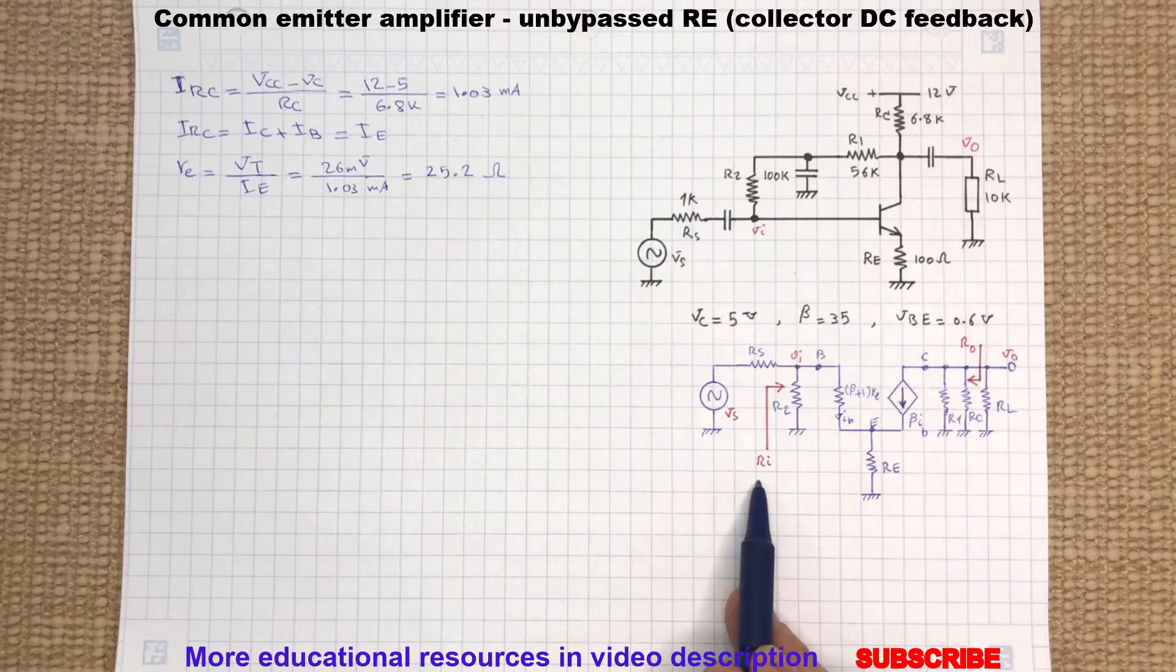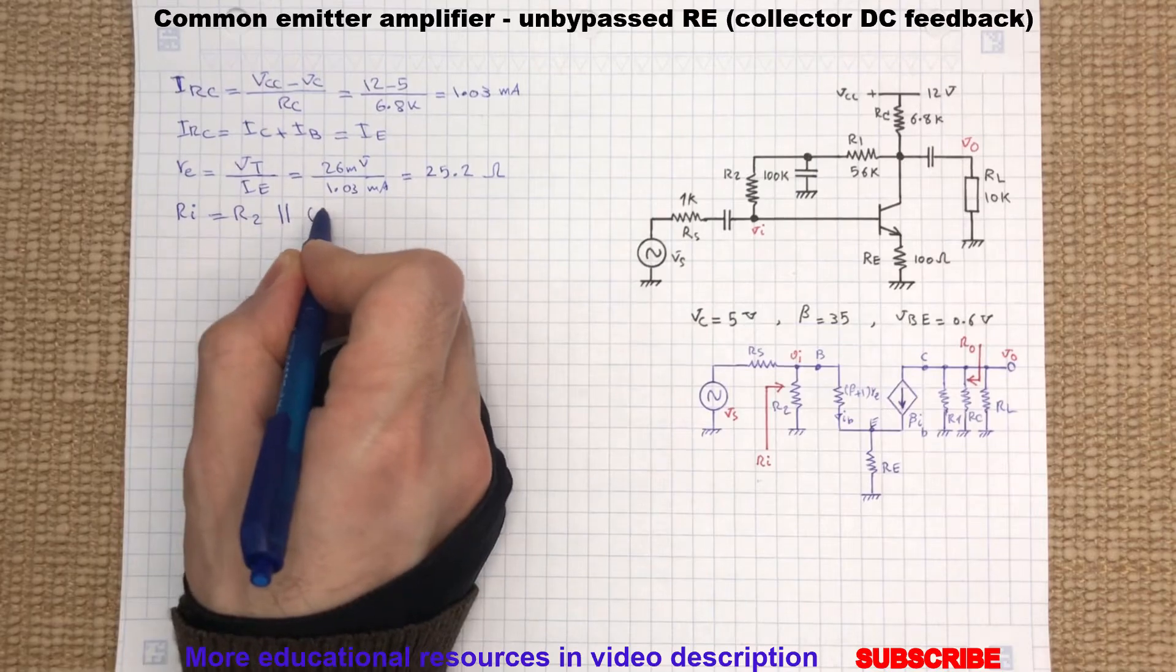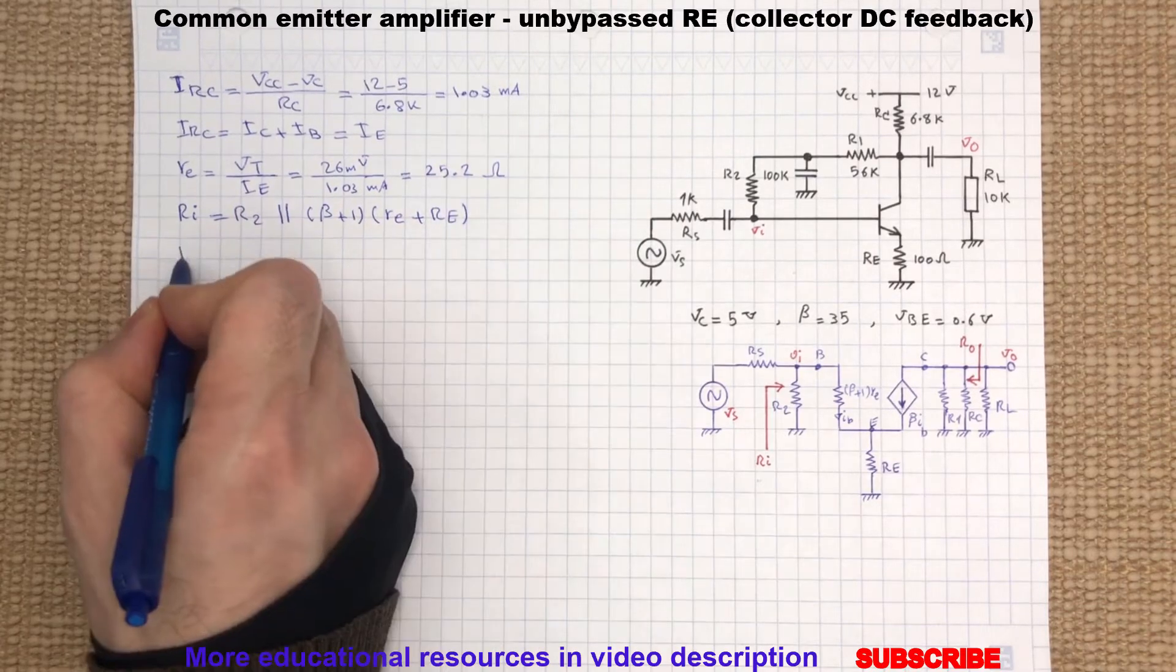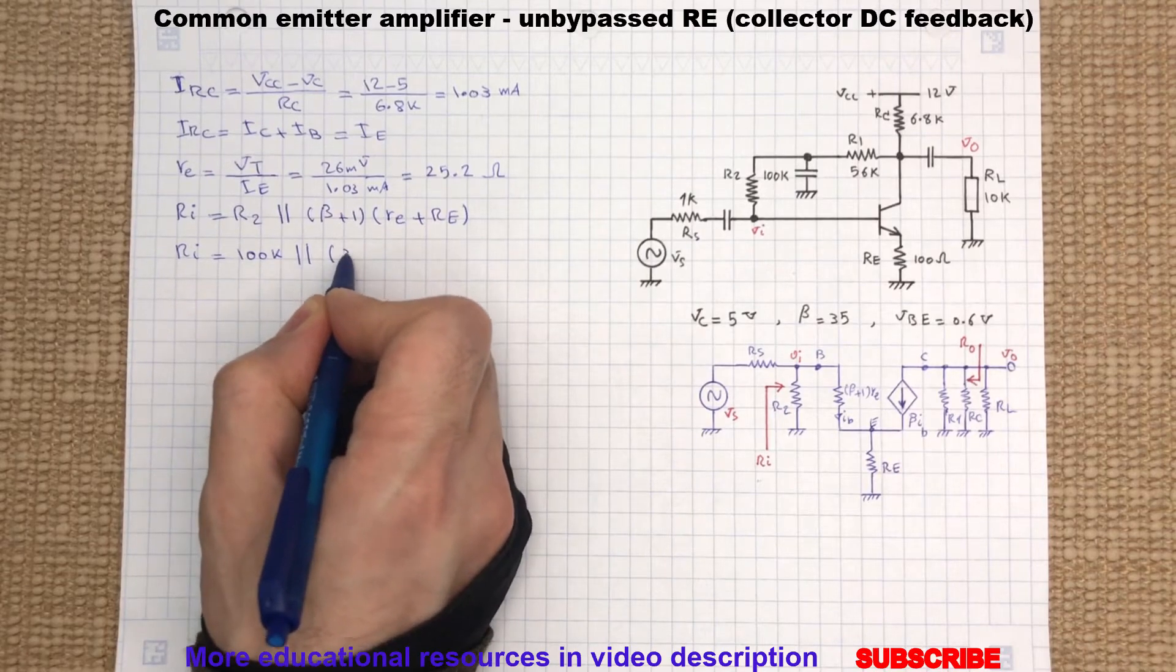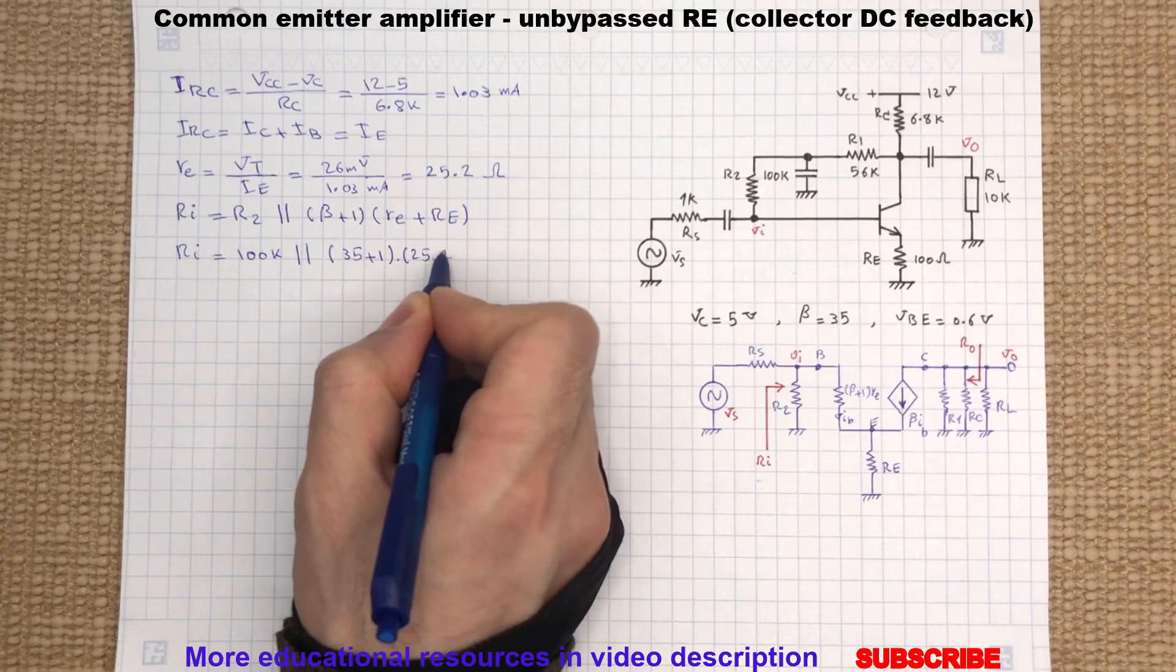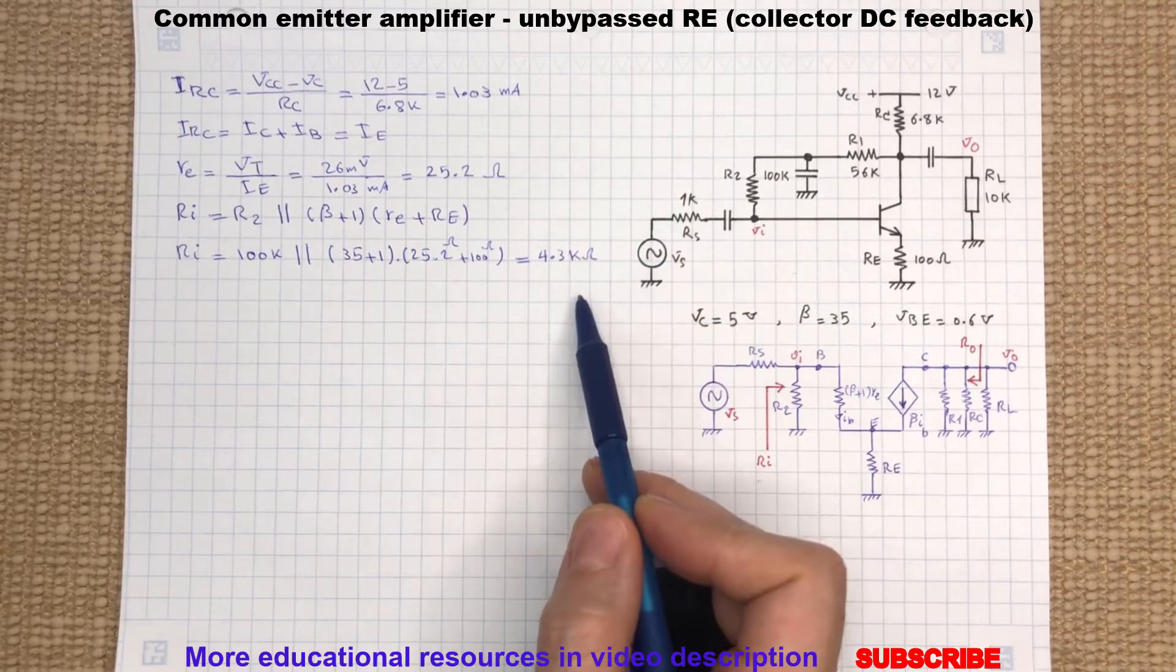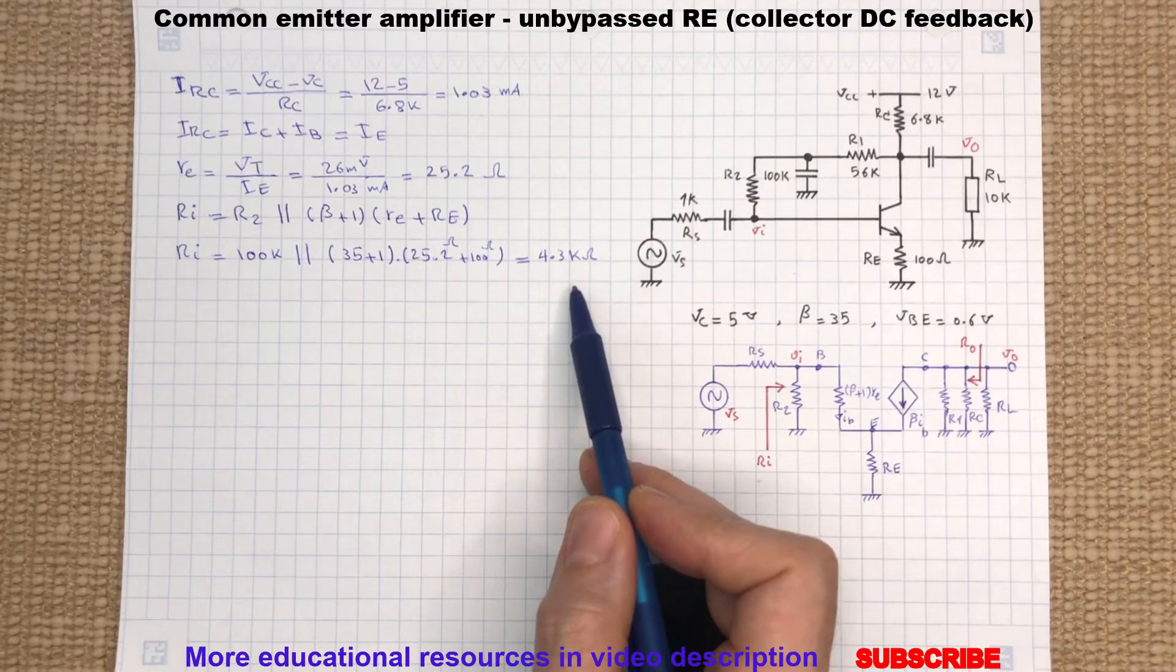What we will see as the input resistance is R2 in parallel with beta plus 1 times the dynamic resistance plus RE. So we can write... So the theoretical value of the input resistance is 4.3 kilo ohm.